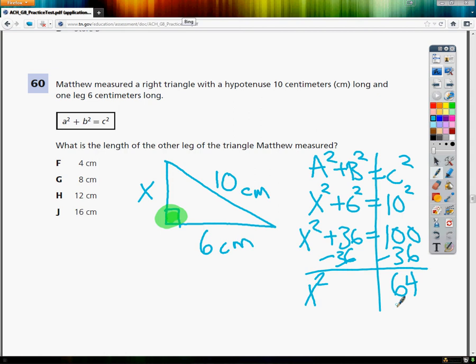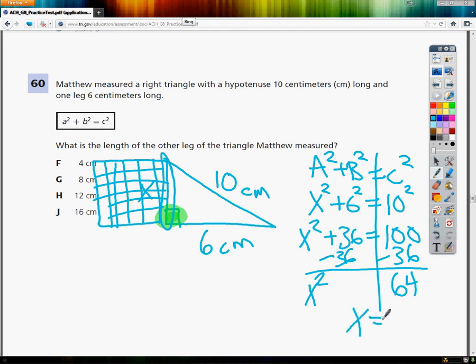From here, the thing that I need to do is finish the problem by getting rid of x squared. The opposite of x squared is the square root. Because right now, I know that this block made out of x's has 64 individual squares, one by ones. But I only want to know how long this one bottom part is, or the root of that square. So I'm going to take the square root of 64 and my final answer is that... this is what the square root looks like. The square root of 64 is just 8. So my answer for number 60 is just g.